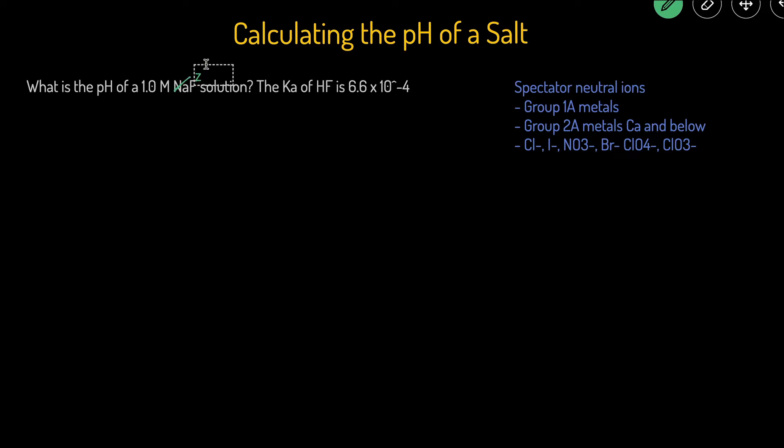If we cross out Na, then we'll be left with F minus because Na is a positive 1 charge, so F has to be a negative 1 charge. So really, this is asking, what is the pH of a 1.0 molar F minus solution? F minus, since this has a negative charge, we know it's going to be basic.